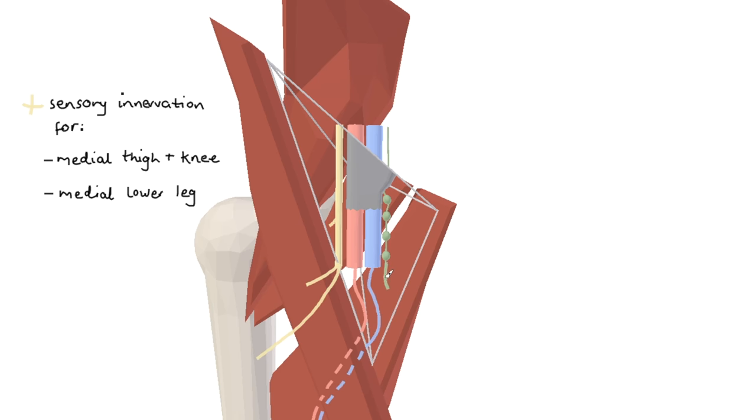Efferent lymphatic vessels coming out of the node in the femoral canal then make up the deep inguinal lymph nodes of the thigh.